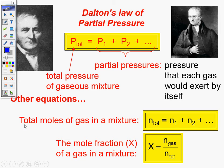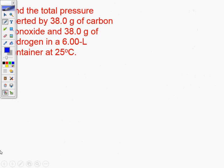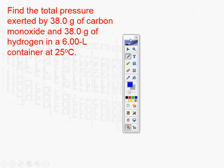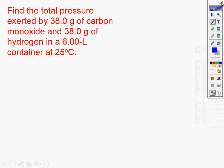I'll give you a chance on this one — it'll make up for the other one. This is why I say they like to test Dalton's Law. Find the total pressure of 38 grams of carbon monoxide and 38 grams of hydrogen in a 6.0 liter container at 25 degrees Celsius. Talk to a neighbor and figure out a plan, or just go ahead and do it by yourself.